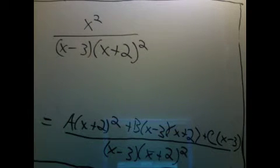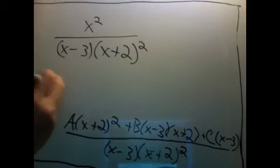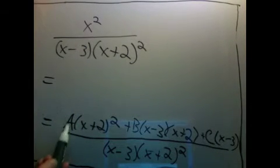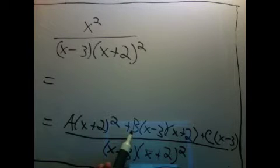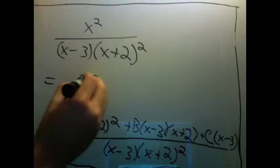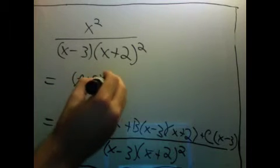So let's combine all these terms. The x squared term, I'll have a in front of x squared here, b in front of x squared here, and there's no x squared there, so I have a plus b times x squared.